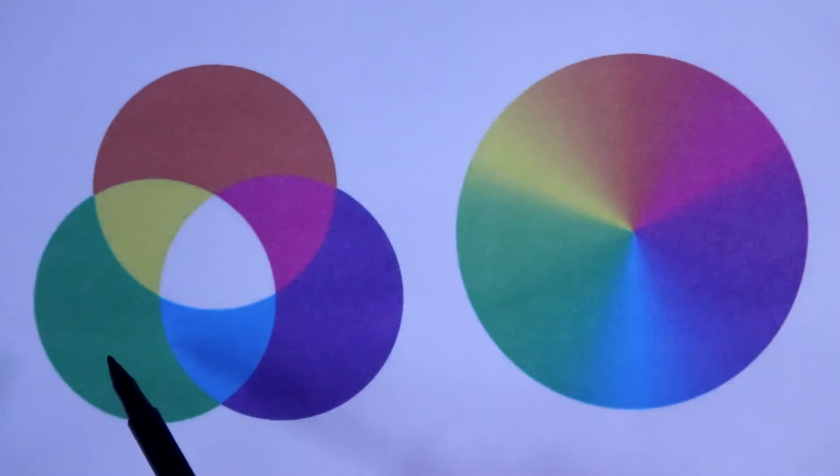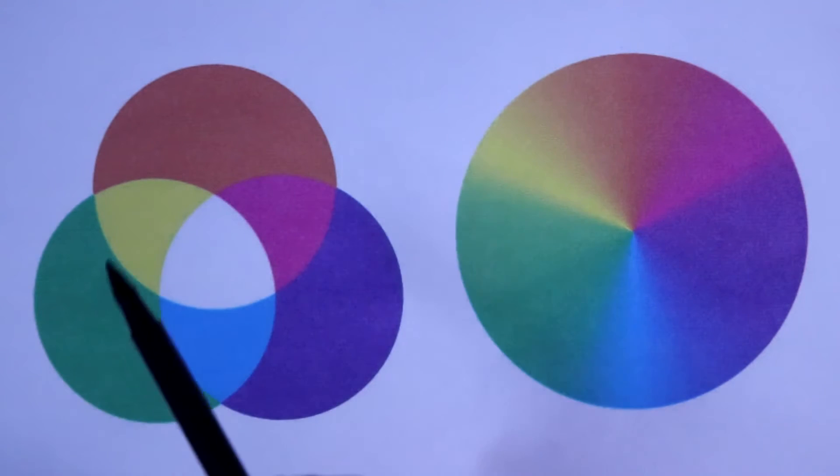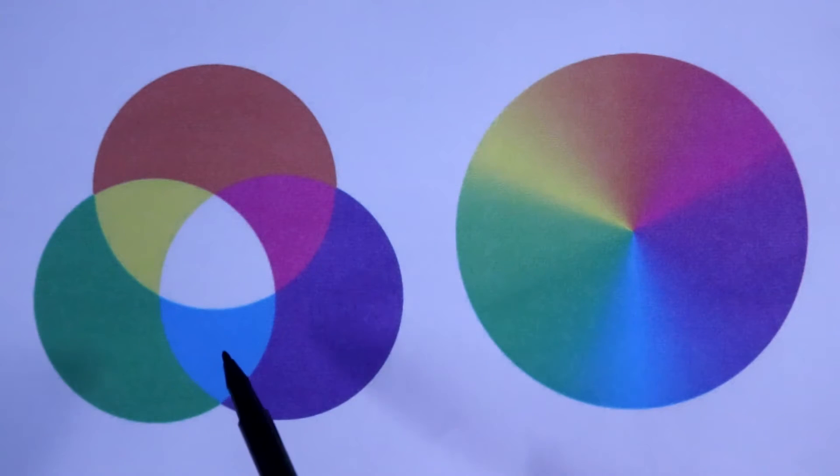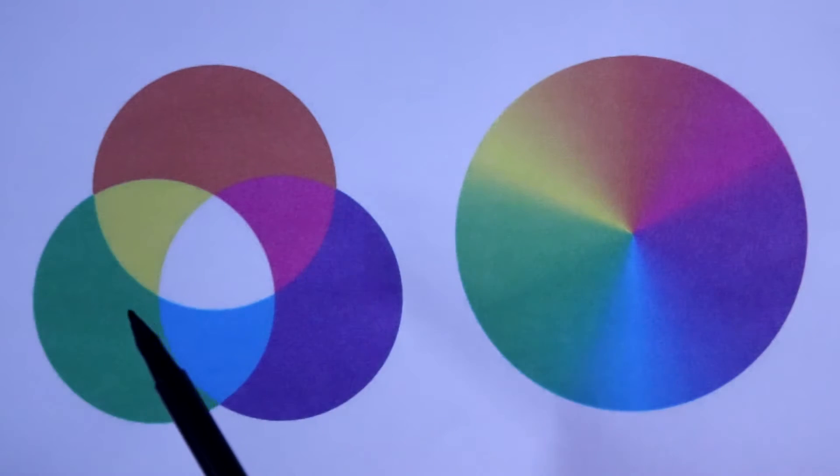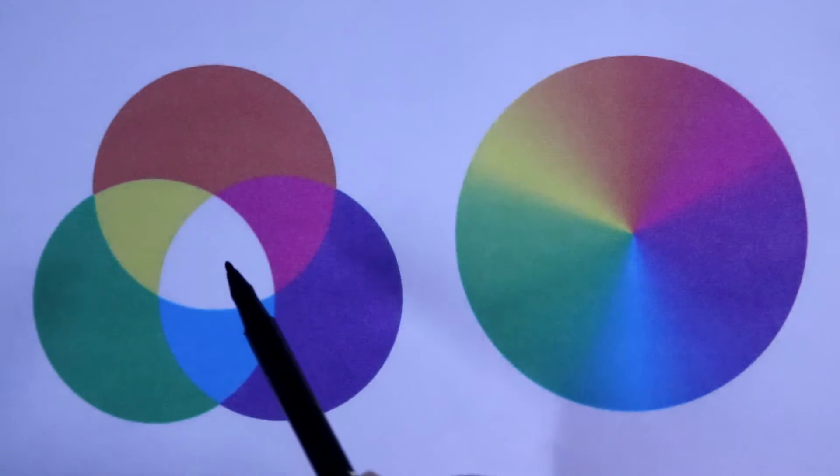This is R, G, and B. If we turn on R and G, then we will get yellow. If we turn on green and blue, then we will get cyan. And with blue and red, we will get magenta. All 3 on, then we will get white.